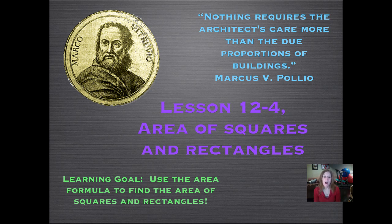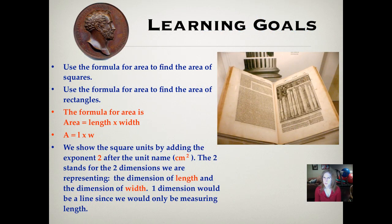So our learning goal tonight is to use the area formula to find the area of squares and rectangles. There's the book that he wrote. It had to do with the 10 important things about architecture, so it's very detailed, and I'm pretty sure it's all in Latin. And there's a coin with his picture on it. When you did really cool things back in ancient Rome, you got your picture on a coin, which would be pretty cool if I had my picture on a coin.